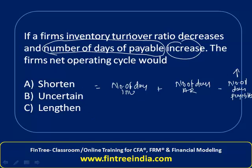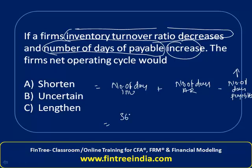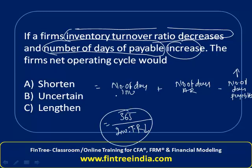However, let's also look at the other information. Inventory turnover ratio has decreased. Number of days of inventory is calculated as 365 divided by inventory turnover ratio. So if inventory turnover ratio has decreased, number of days in inventory is going to increase.